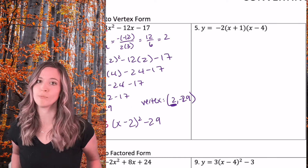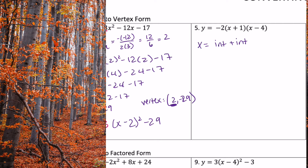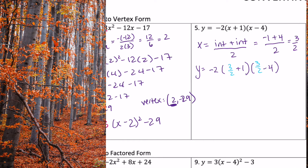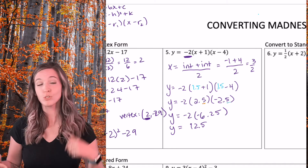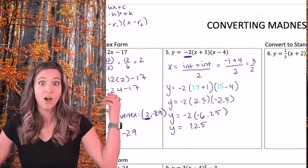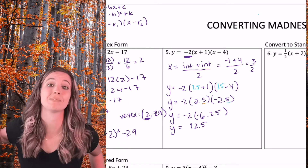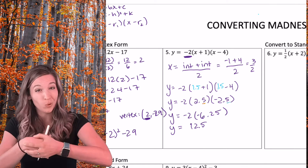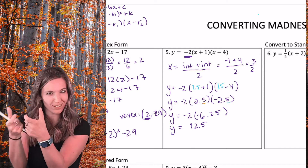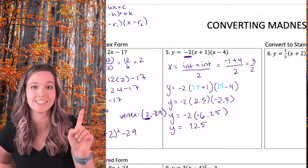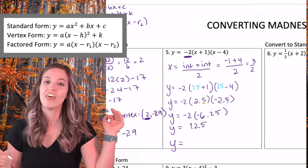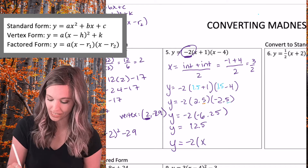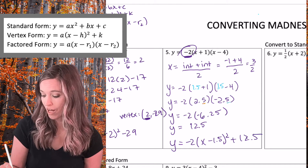Number five is in factored form. You know how to find the vertex from x-intercept form — go find it. I did x-intercept plus x-intercept divided by 2 to find axis of symmetry: x equals 3 halves, or 1.5. Plug in 1.5 to find the y-coordinate: negative 2 times 2.5 times negative 2.5. That's 2.5 times negative 2.5 — move the decimal twice to get negative 6.25, times negative 2 is positive 12.5. Vertex is (1.5, 12.5). Vertex form: y equals negative 2 times (x minus 1.5) squared plus 12.5.